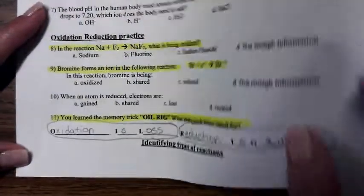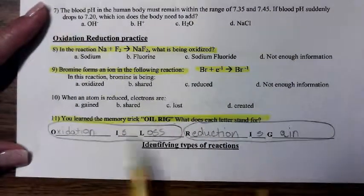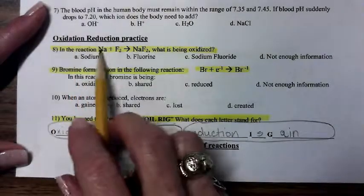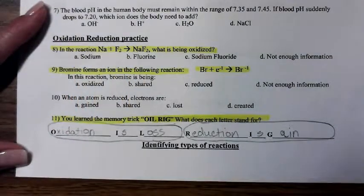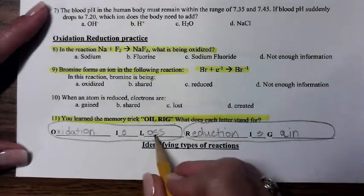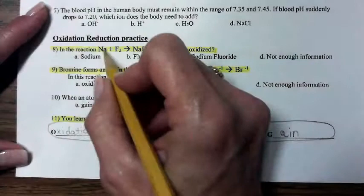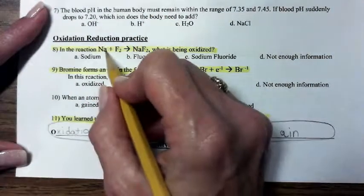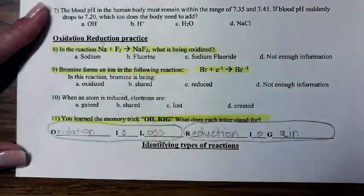So we look back here at number 8 and keep this in mind. In the reaction, sodium plus fluorine yields sodium fluoride. What is being oxidized? Hmm. So oxidized is loss of electrons.